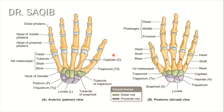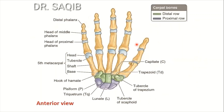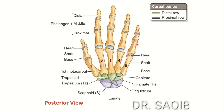For reference, these are the eight carpal bones — a proximal row and a distal row of four bones each. These are the metacarpals and these are the phalanges, shown in both anterior and posterior views.